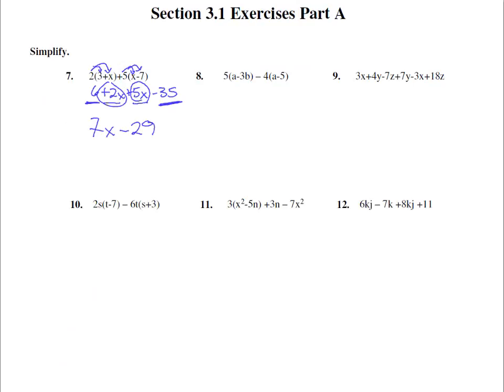Number 8. We have 5(a-3b) - 4(a-5). Getting rid of the parentheses, we can jump the 5 in and this 4. But note that this is a -4 that we're jumping in. That minus sign will stick on that 4. 5 times a is 5a, -15b. When we jump the -4 in, we get -4a+20. Now this is a -4 times a -5.